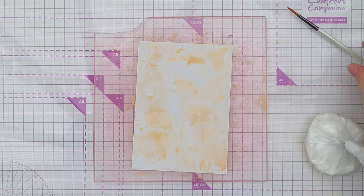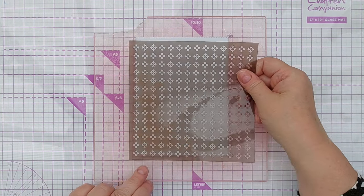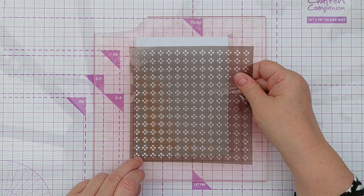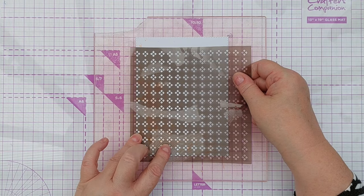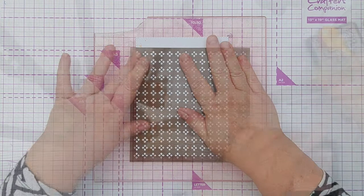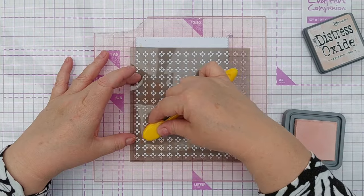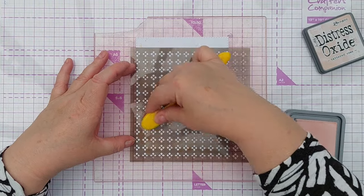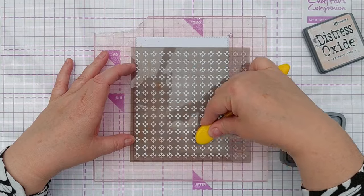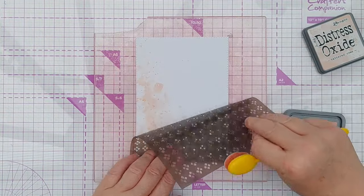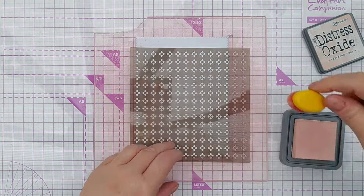Next I brought my panel back in, popped it on my grip mat again and chose a stencil with quite a small pattern on it and brushed some tattered rose through the stencil, peeling back the stencil every once in a while to check how my stenciling was going. I just wanted to add a bit of subtle pattern over my smushed ink area.